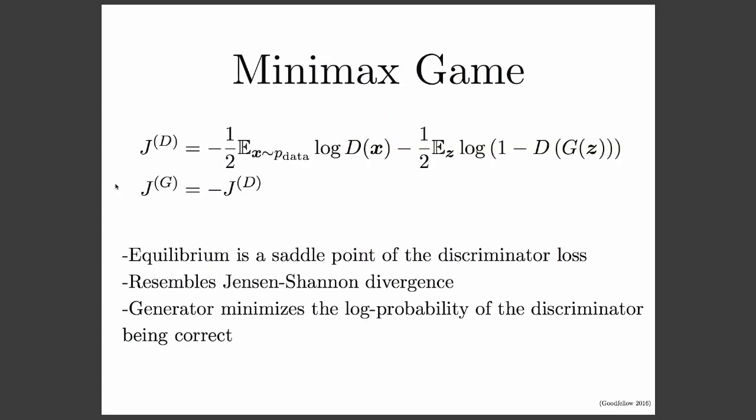We can formally describe the learning process using what's called a minimax game. We have a cost function for the discriminator J^D, which is just the normal cross-entropy cost associated with the binary classification problem of telling real data from fake data. We have one mini-batch of real data drawn from the dataset and one mini-batch of fake data drawn from the generator. In the minimax formulation, the cost for the generator is just the negation of the cost for the discriminator. The equilibrium of this game is a saddle point of J^D, and finding this saddle point resembles the process of minimizing the Jensen-Shannon divergence between the data and the model. We can use that to prove that we'll recover the correct data distribution if we go to the equilibrium of the game.